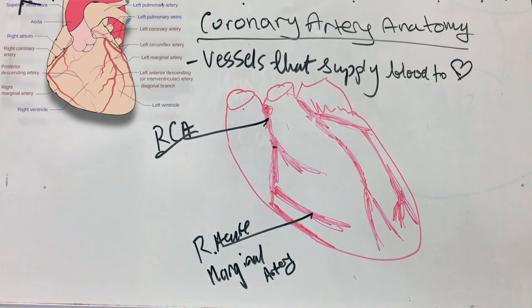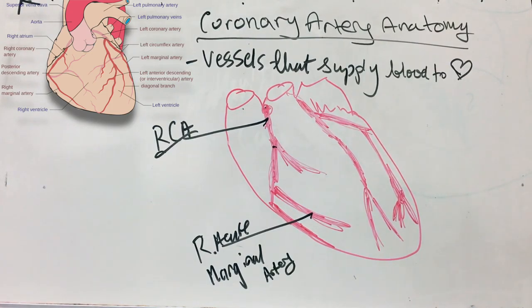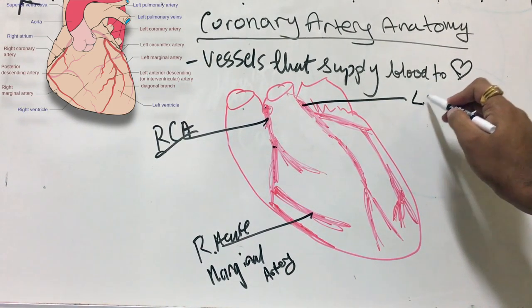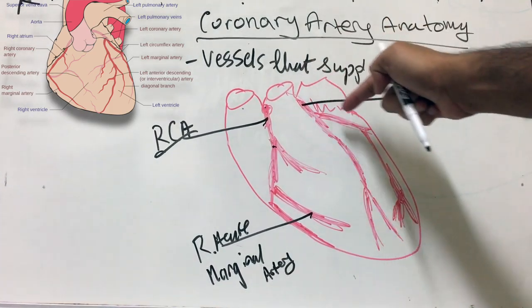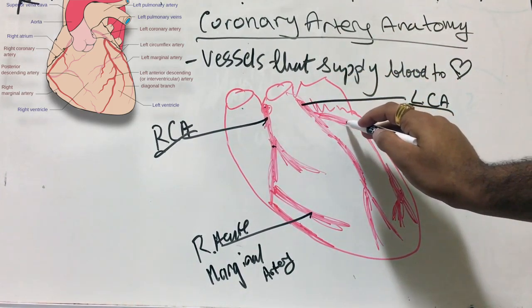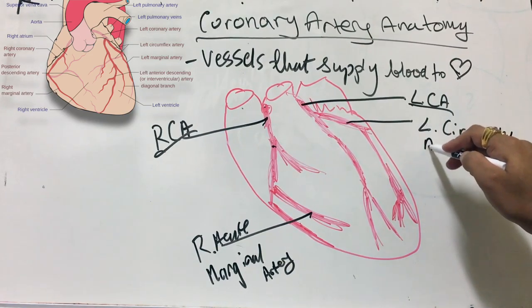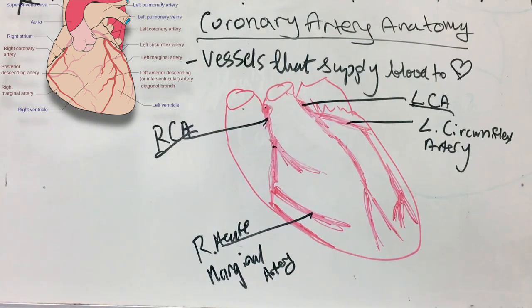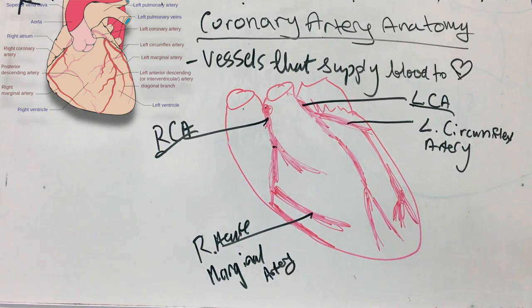Now we're looking at the artery that comes off on the left side — this is the left coronary artery. A branch off of the left coronary artery is the left circumflex artery. The left circumflex artery supplies the left and a little bit of the posterior side of the walls of the left ventricle.